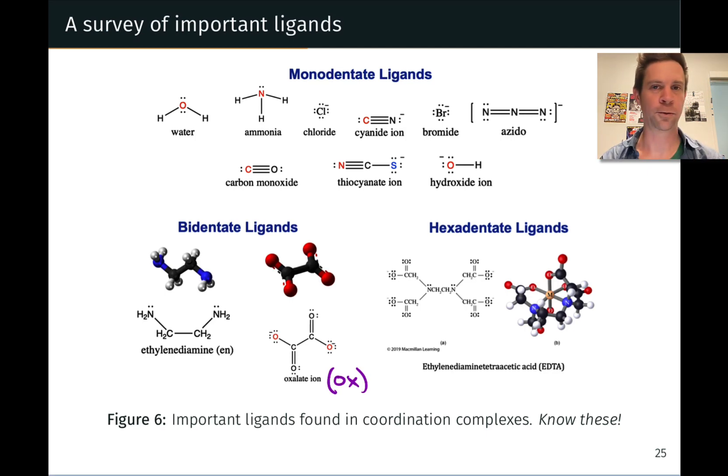A number of the small monodentate ligands are structures you're probably already familiar with, like halide anions, cyanide, ammonia, and water. Although some of the more exotic examples, like the azide anion and carbon monoxide, might be worth practicing.